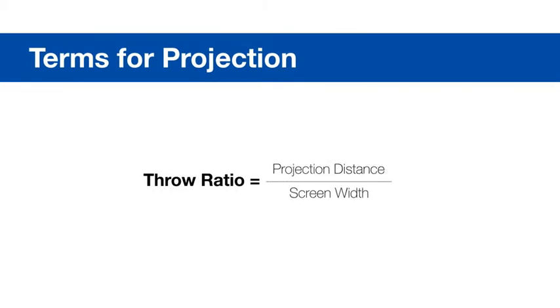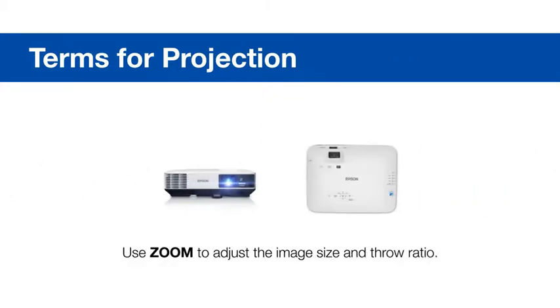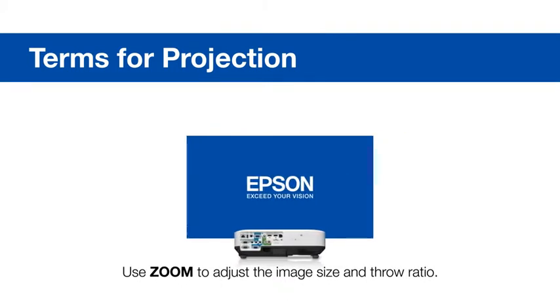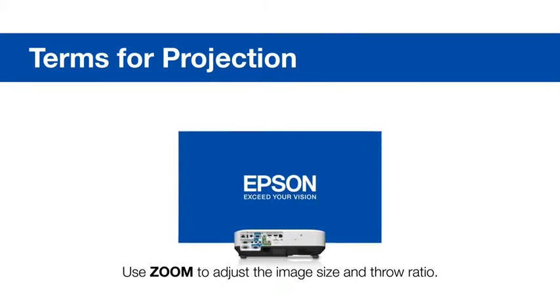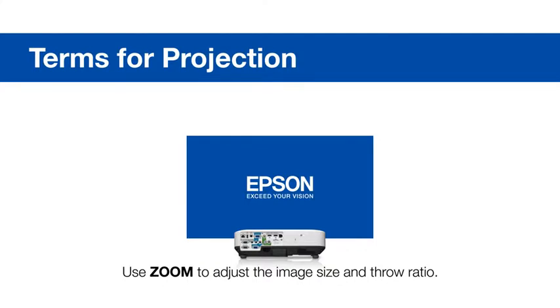Throw ratio is the ratio of the projection distance divided by the width of the screen. Most projectors have a zoom range, like 1.0 to 2.0. While maintaining the projection distance, you can adjust the size of the image by zooming in and out, which changes the throw ratio.